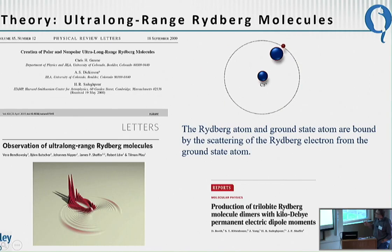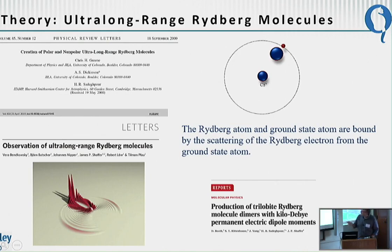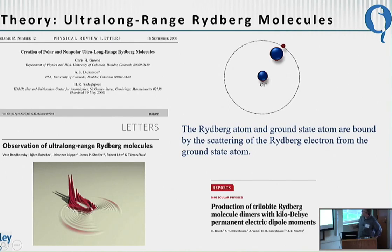There's very little interaction between the core and this atom, but there's enough interaction between the electron and the ground state atom that you can form a molecule at ultra-cold temperatures. It was Hossein and collaborators Chris Green and Alan Dickinson who first realized you could observe these at ultra-cold temperatures. They were then observed at the University of Stuttgart, and when I left there after a long sabbatical, I came and did some work in my research group in Oklahoma on cesium — these earlier ones were in rubidium.